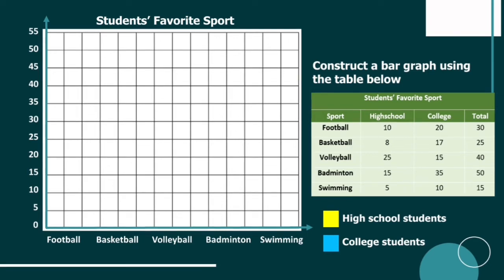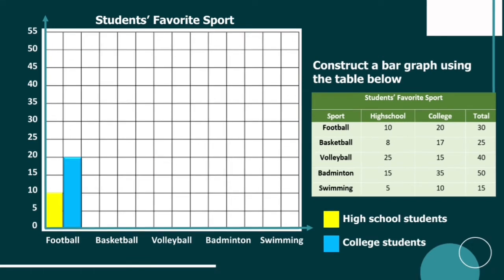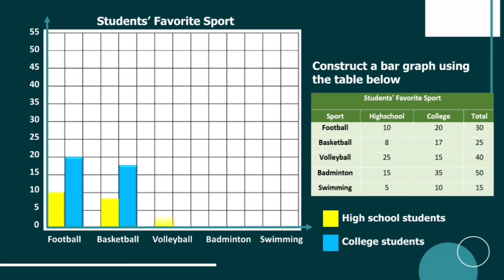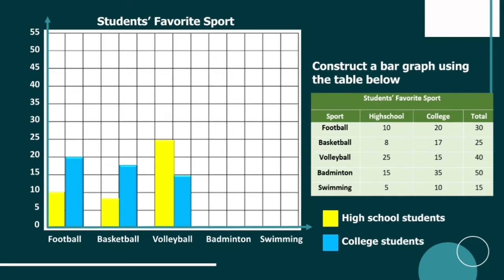Let's draw the bars. In football, out of 30 students, there are 10 high school students and 20 college students. For basketball, we have 8 high school students and 17 college students. For volleyball, we have 25 high school and 15 college. For badminton, we have 15 high school students and 35 college students. And that's how we plot a double bar graph for students' favorite sport.